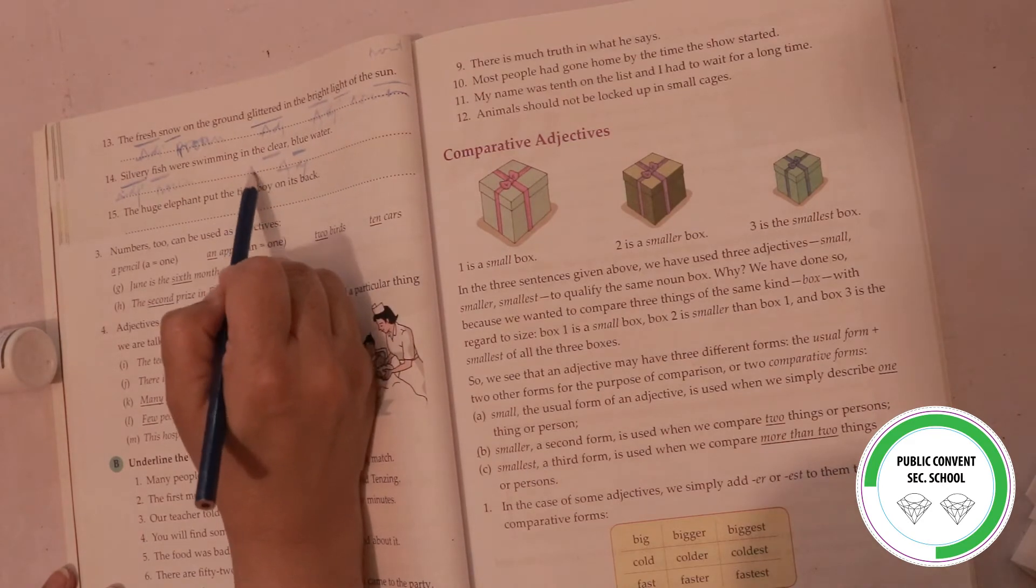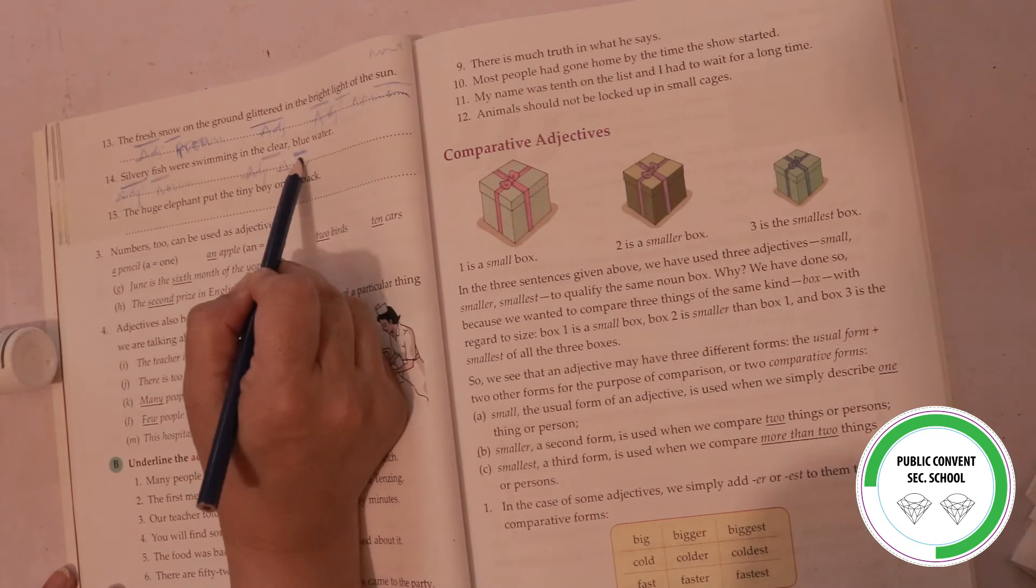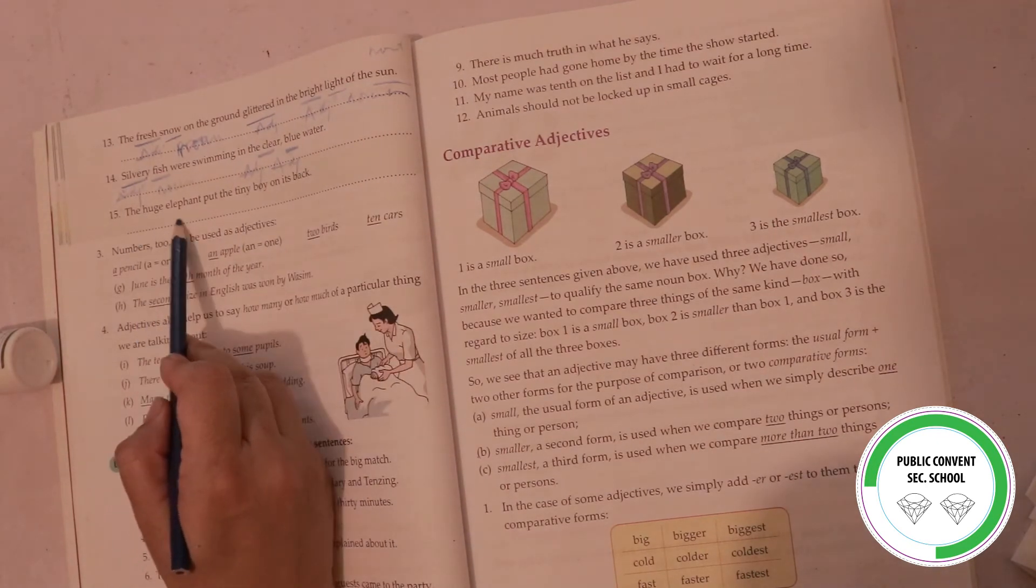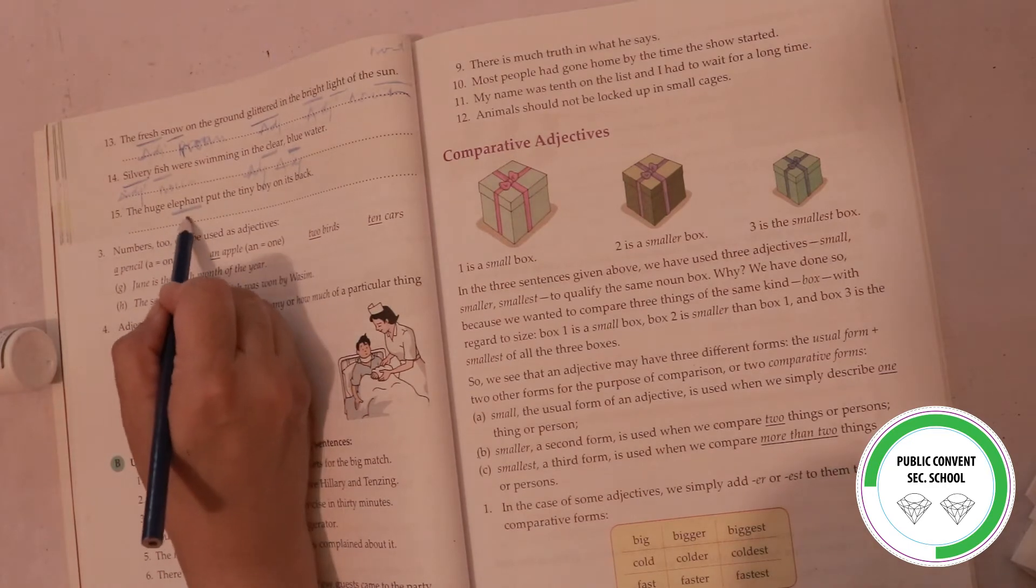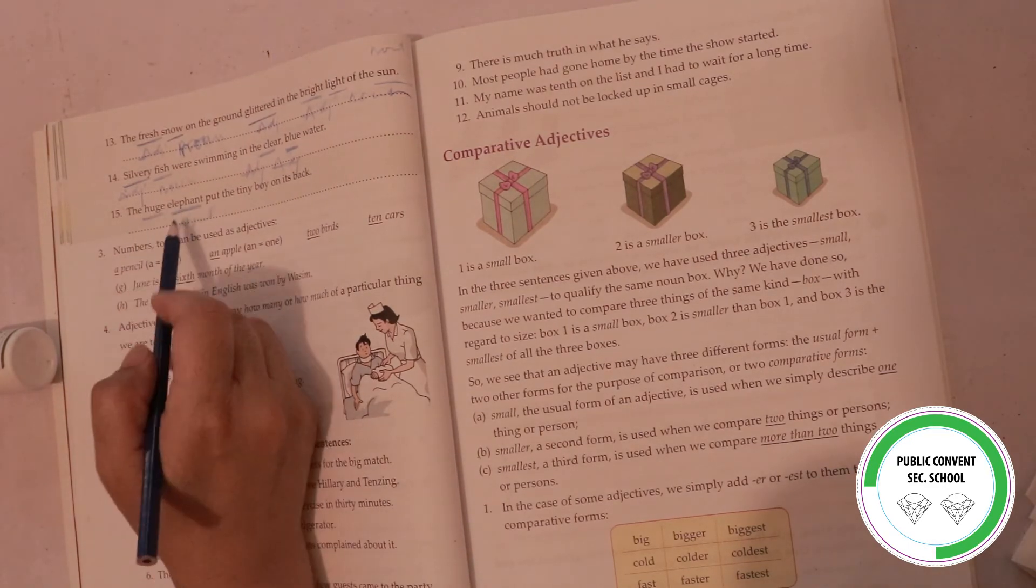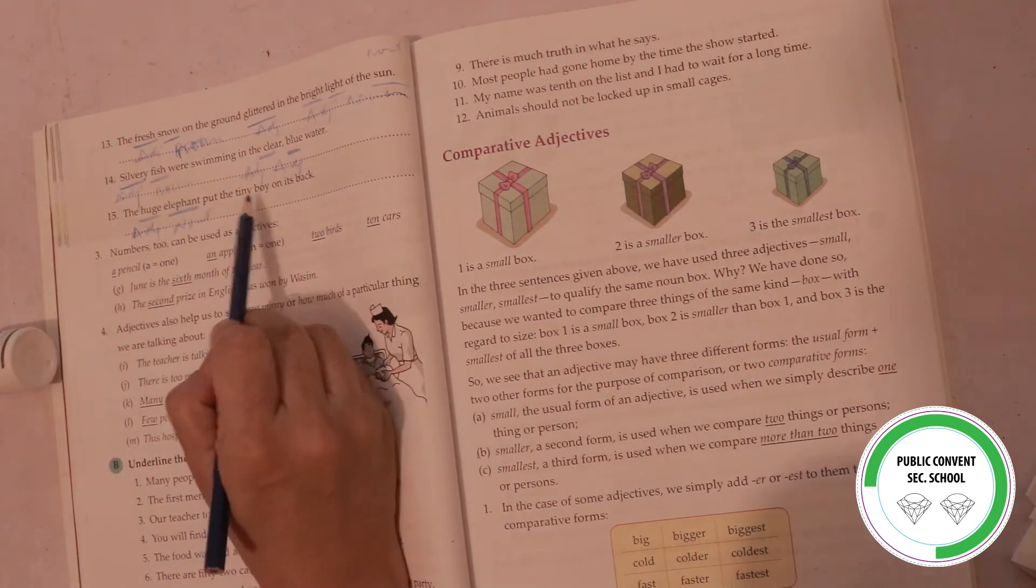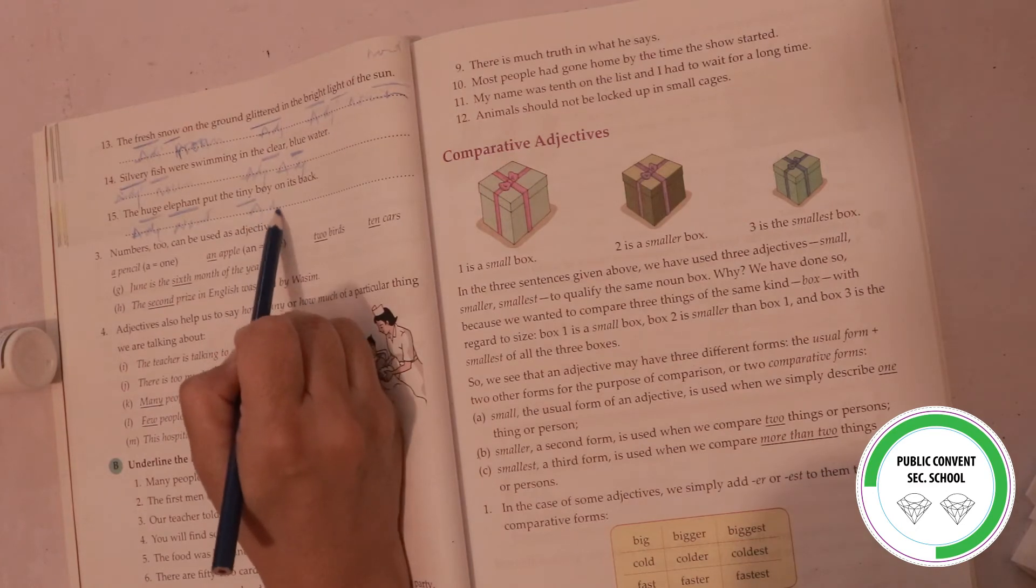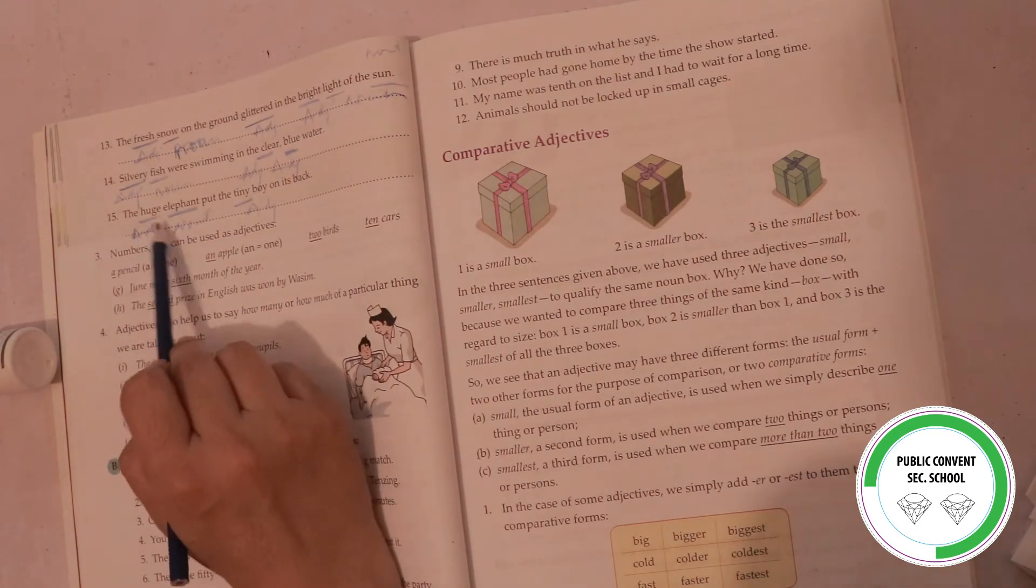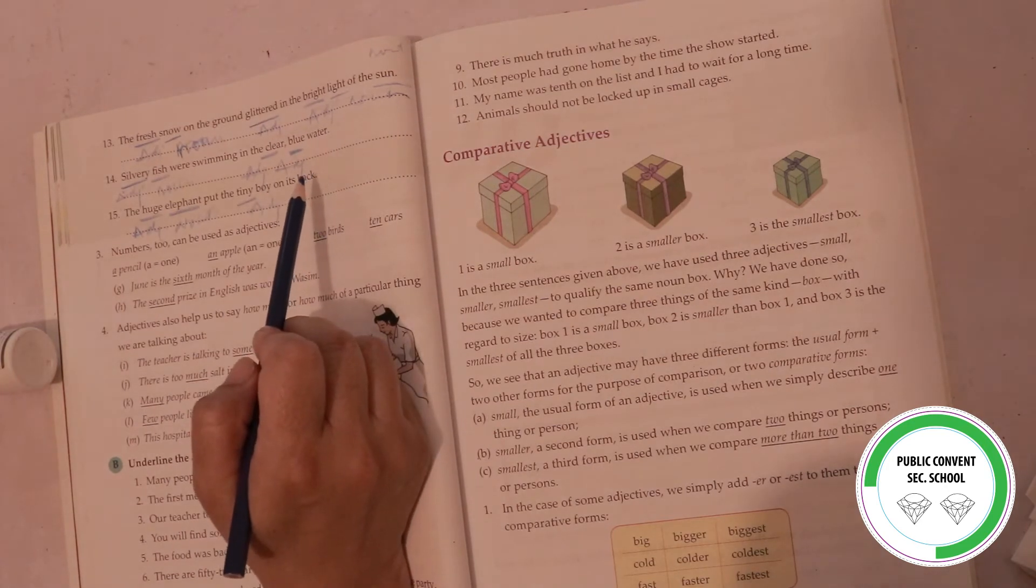The huge elephant - this elephant is known as huge. Huge is adjective. And tiny boy on its back - tiny boy, adjective. The huge elephant put the tiny boy on its back.